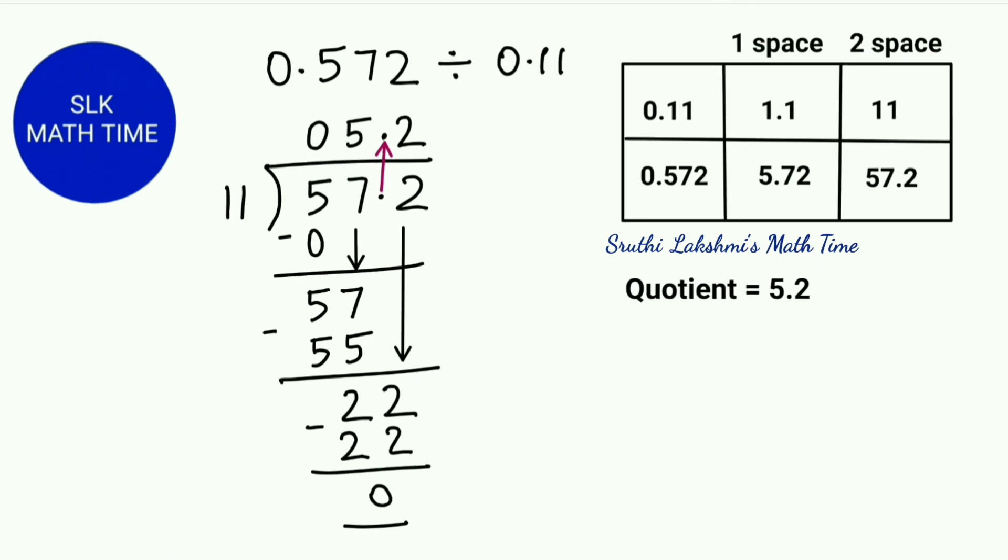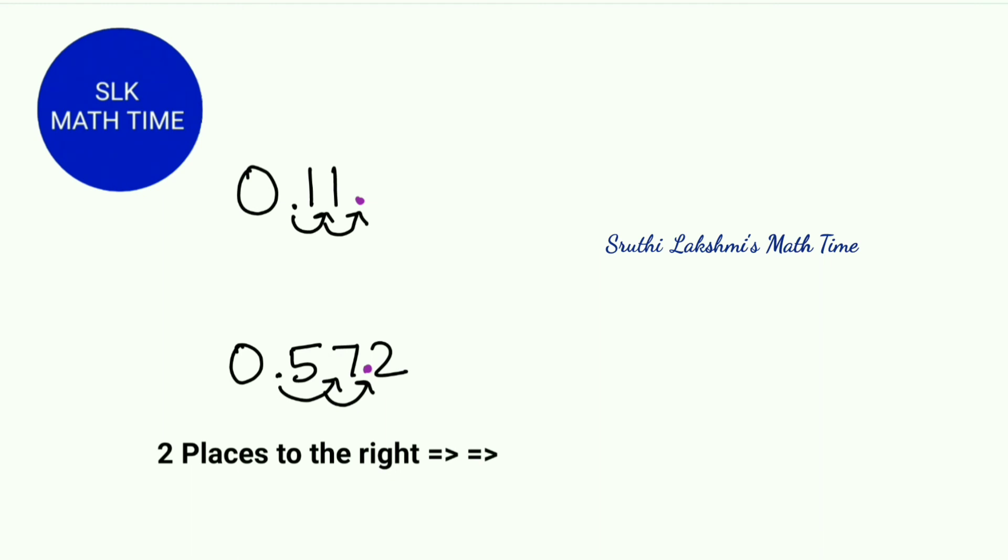This only works because we shifted or moved the decimal point in both the divisor and the dividend by the same amount and the same direction. This works the same way as equivalent fractions.